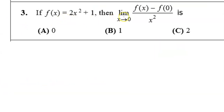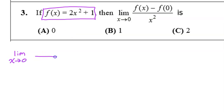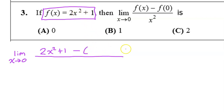Number 3: we need to find the limit of this expression as x approaches 0. This expression involves the function f, which is given off to the side. So first I need to substitute f into the expression. In the numerator we have f of x, so I copy the expression 2x squared plus 1, then minus f at 0 — I substitute 0 for x and put it all in parentheses because I have a binomial with a negative in front that has to be distributed. In the denominator we simply have x squared.